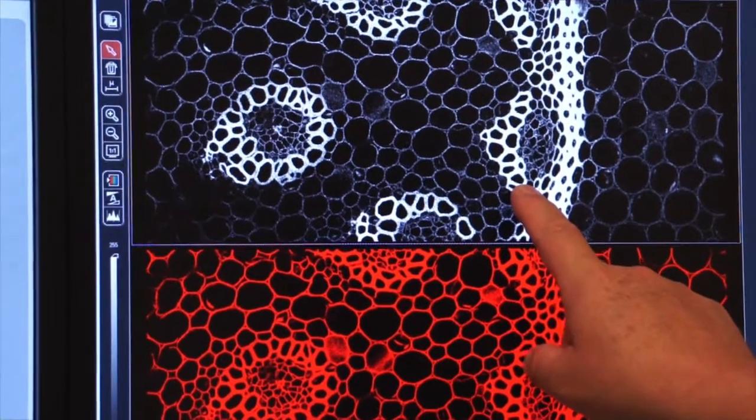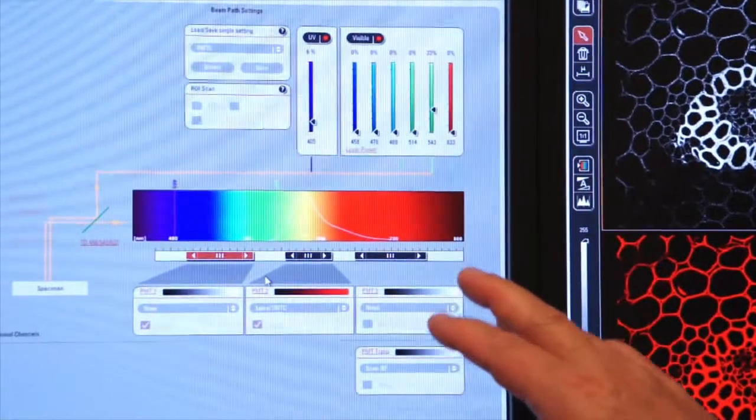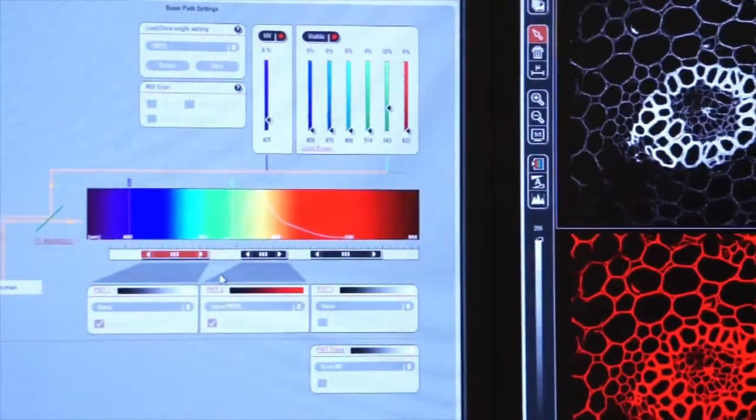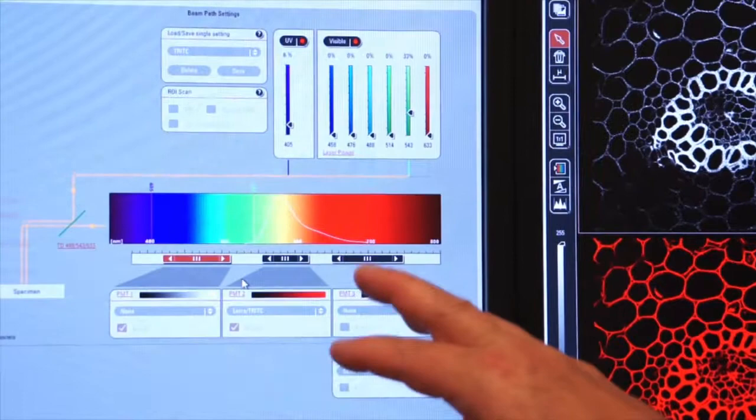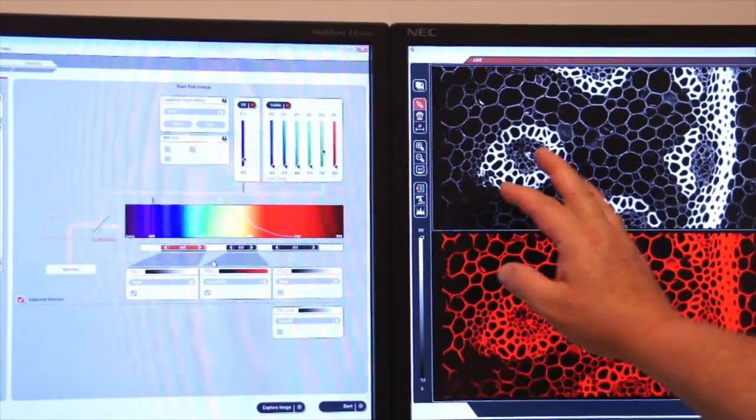The photomultiplier tubes are very powerful in increasing the illumination of your image in areas of the spectrum that maybe you're not looking at based on what the manufacturer tells you about the fluorophore.